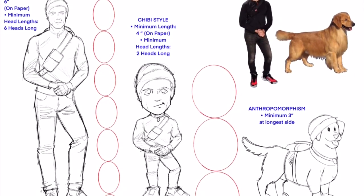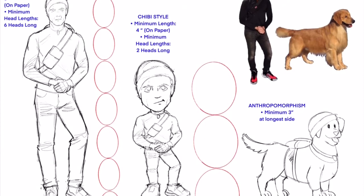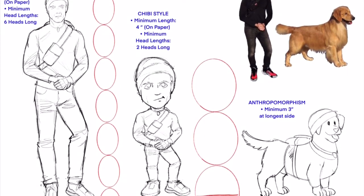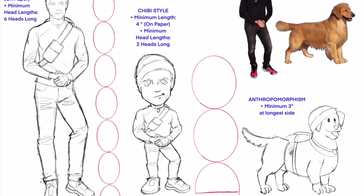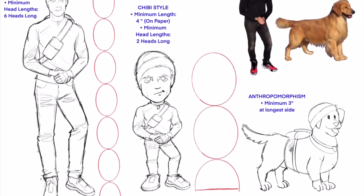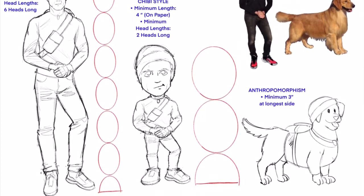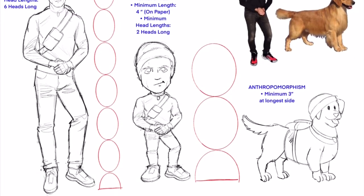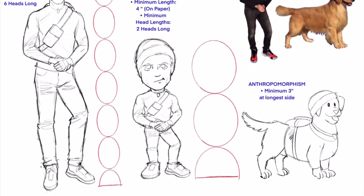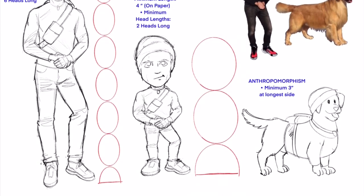Realistic figures often connotate drama. If we illustrate our protagonist in a chibi or cute or cartoony style, it tends to suggest humor. Anthropomorphism, however, is very similar to chibi style. It often can suggest humor or more of a slapstick tone with this design.